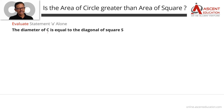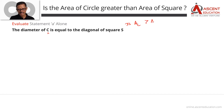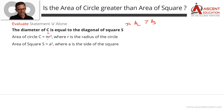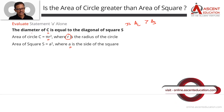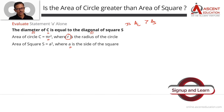Let's start by evaluating statement A alone. Statement A says: the diameter of circle C is equal to the diagonal of square S. The area formula for a circle is πr², where r is the radius. The area formula for a square is a², where a is the side length.